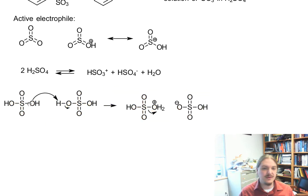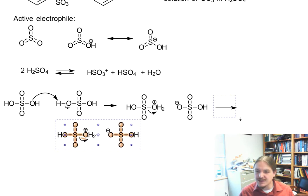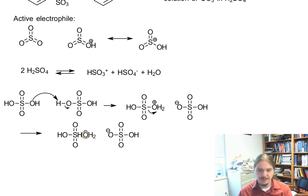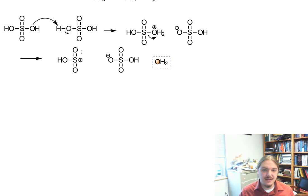If you're using fuming sulfuric acid then the sulfur trioxide present in the reaction can be protonated directly. Here's my protonated sulfur trioxide. So now this thing is my active electrophile and let's draw the mechanism of its reaction with benzene.